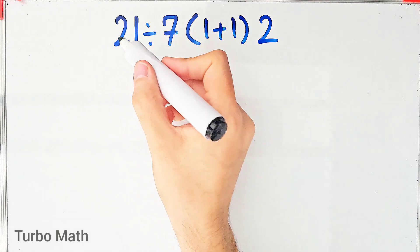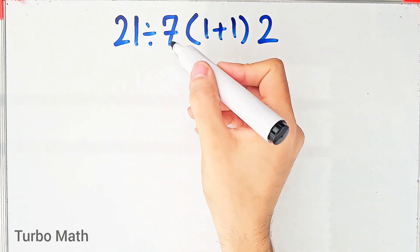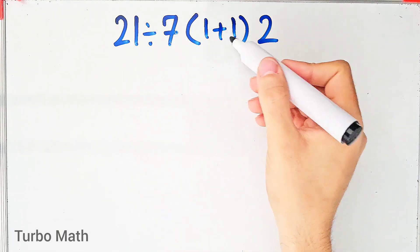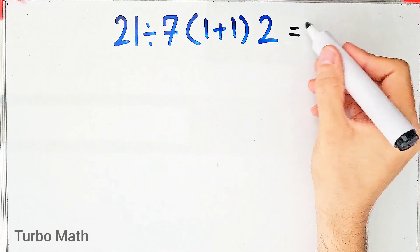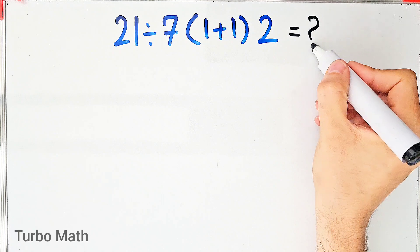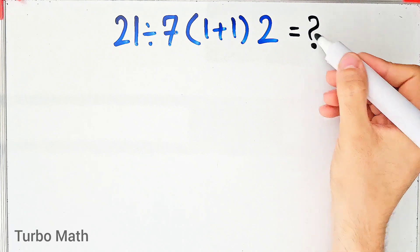21 divided by 7, then times 1 plus 1, then times 2. What is the answer to this question?